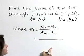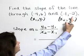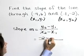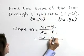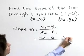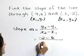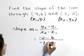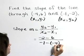Now let's substitute values. y2 is negative 2, minus y1, which is 6, over x2, which is negative 1, minus x1, which is negative 4.